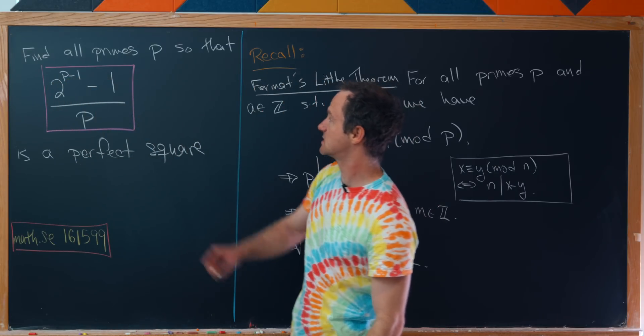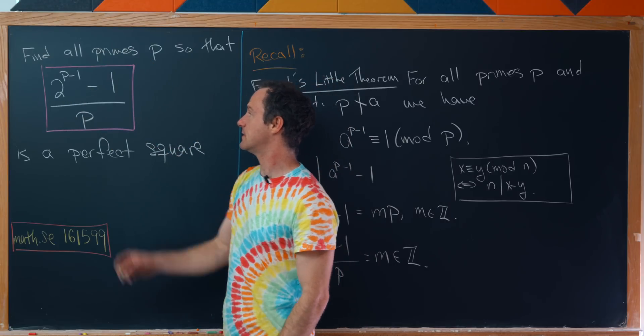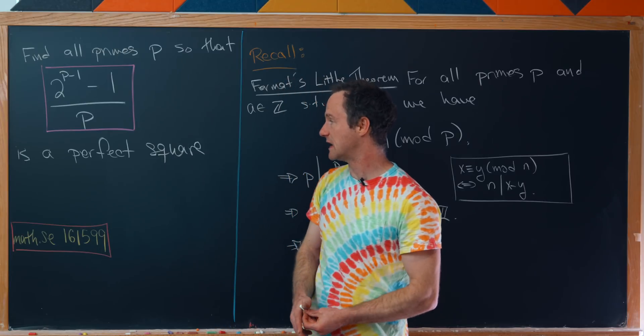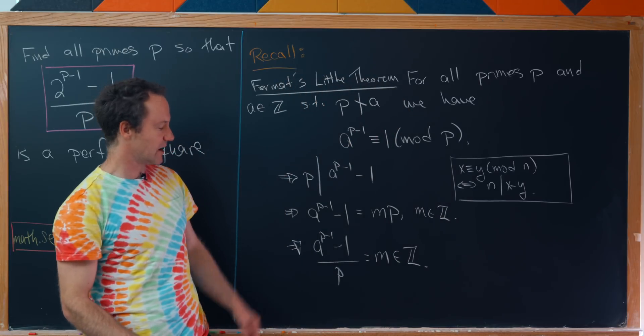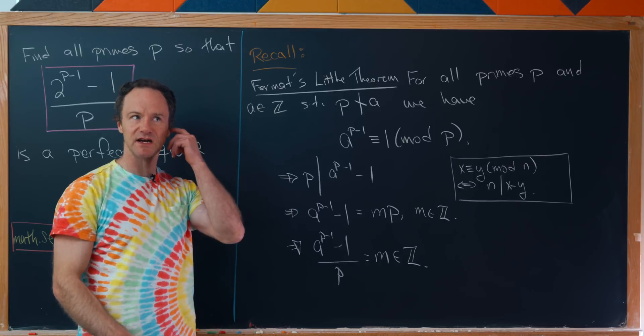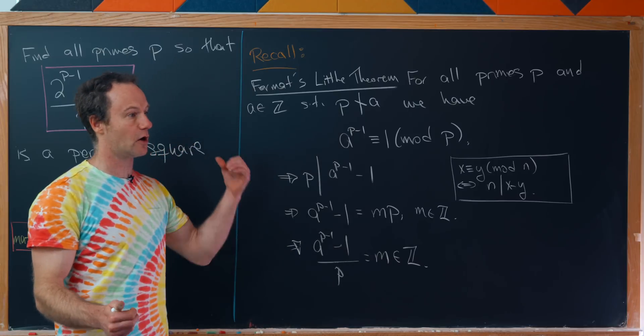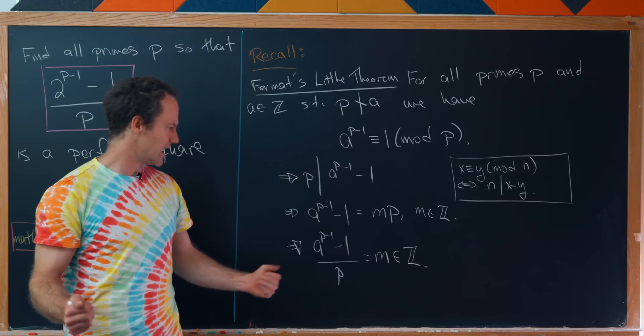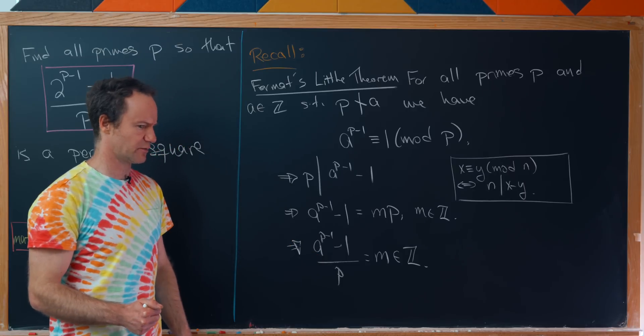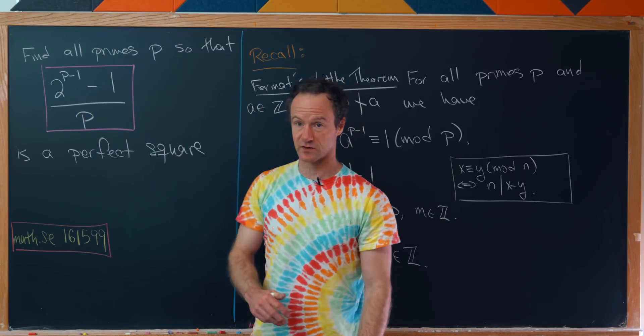The problem is to find all primes p so that (2^(p-1) - 1)/p is a perfect square. Here we've replaced a with 2. A super general version would be to find all pairs a and p that make this quotient a perfect square, but that sounds very hard. So we're gonna stick with this case first.